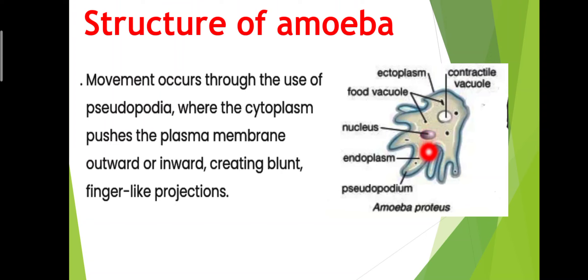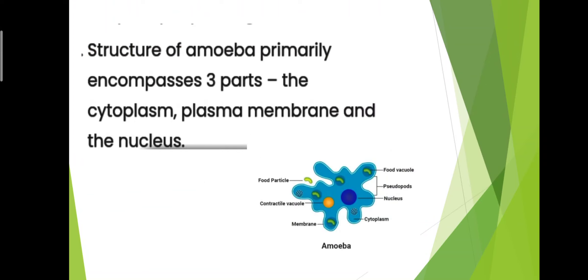It is formed where the cytoplasm pushes the plasma membrane outward or inward. The structure of amoeba primarily encompasses three parts: the cytoplasm, plasma membrane, and the nucleus.